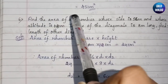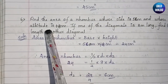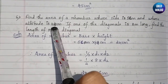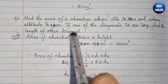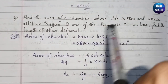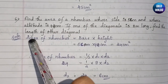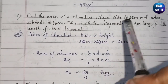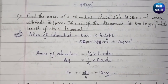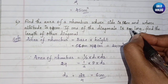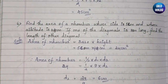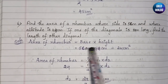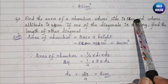Moving to the sixth question: find the area of a rhombus whose side is 5 centimeters and whose altitude is 4.8 centimeters. Altitude here means the height of the rhombus is 4.8 cm. If one of its diagonals is 8 centimeters long, find the length of the other diagonal.